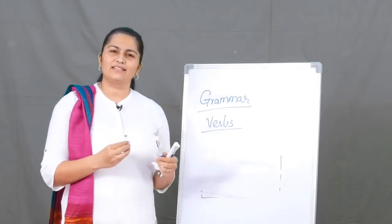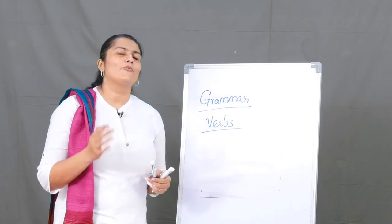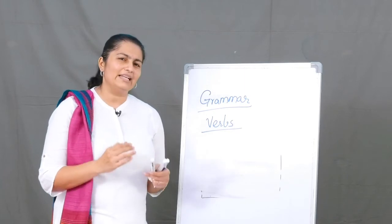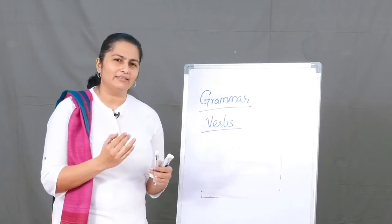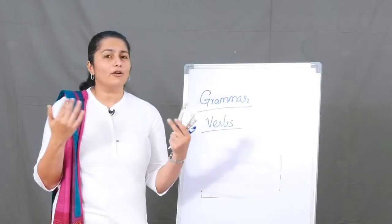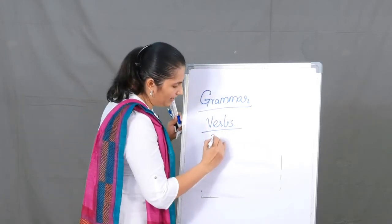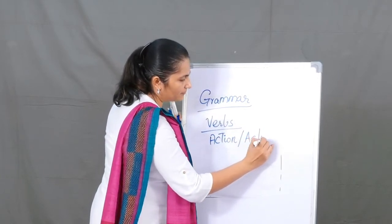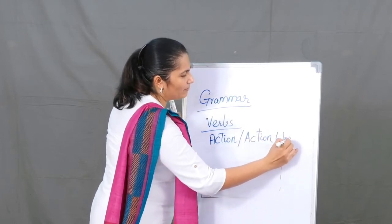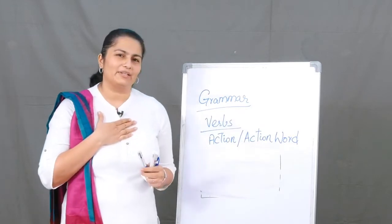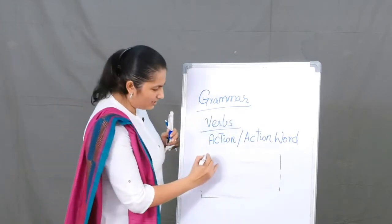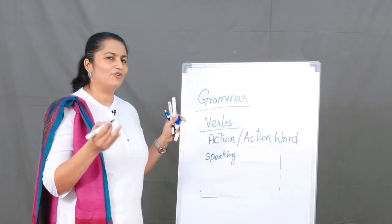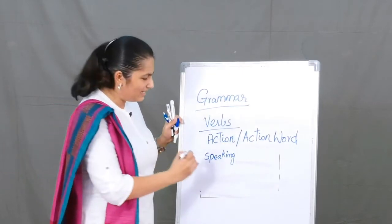Almost every sentence that you read, write, or hear will have verbs. Verbs are a very important part of a sentence — they are called the action word, the action that you or I or someone else or something does. Let me make it more clear: what am I doing? I am speaking, so my action is speaking. And you are listening, so your action word or verb is 'listening'.